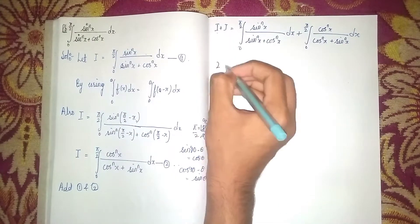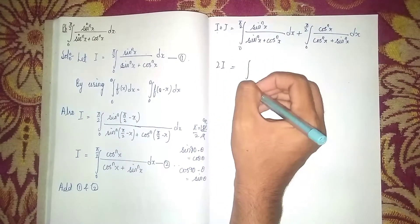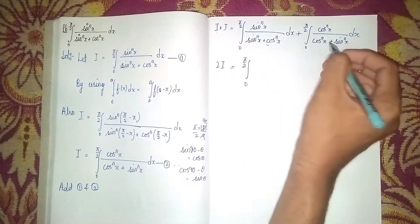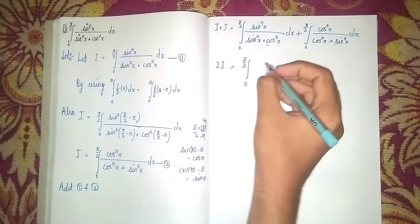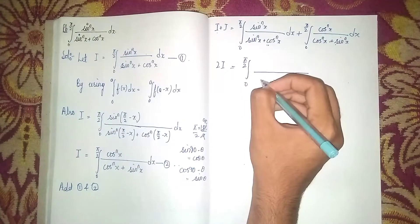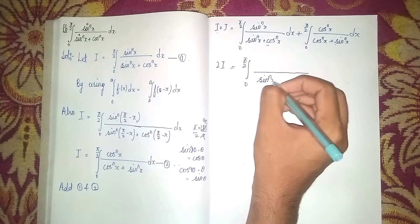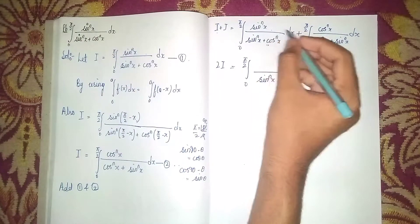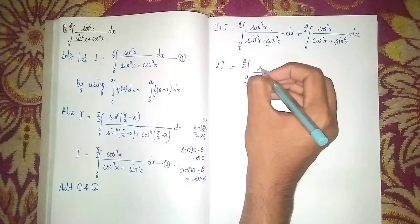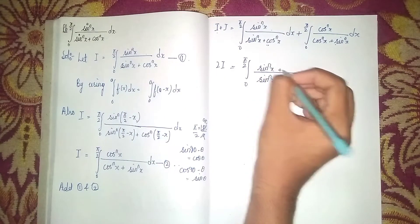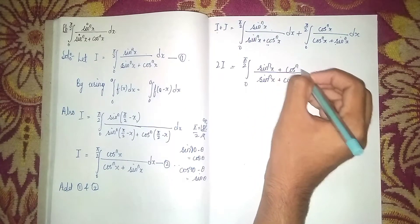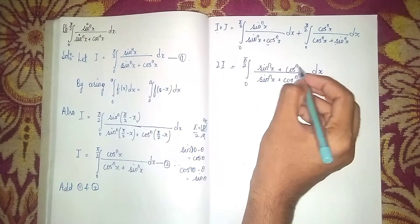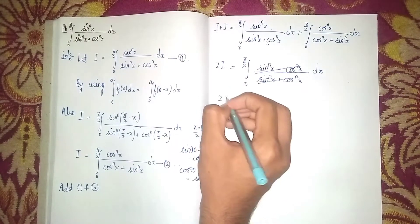So 2I = ∫₀^(π/2) [sin^n(x) + cos^n(x)] / [sin^n(x) + cos^n(x)] dx. You can see that both denominators are the same, so we take sin^n(x) + cos^n(x) as a common denominator and add the numerators.